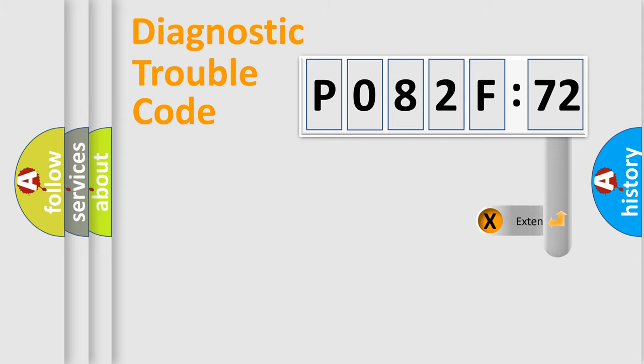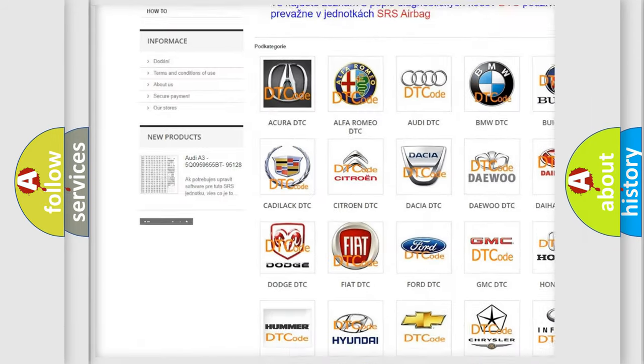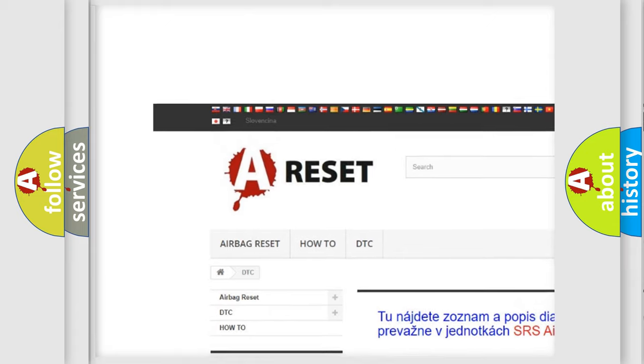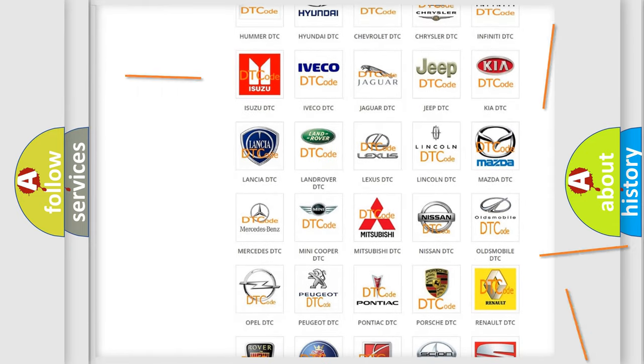Our website airbagreset.sk produces useful videos for you. You do not have to go through the OBD2 protocol anymore to know how to troubleshoot any car breakdown. You will find all the diagnostic codes that can be diagnosed in Nissan vehicles, and many other useful things. The following demonstration will help you look into the world of software for car control units.